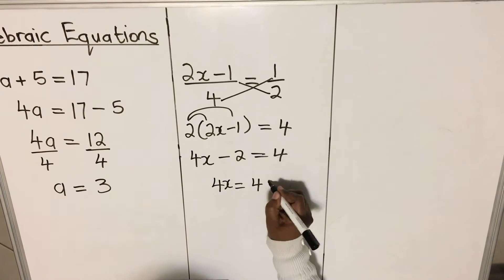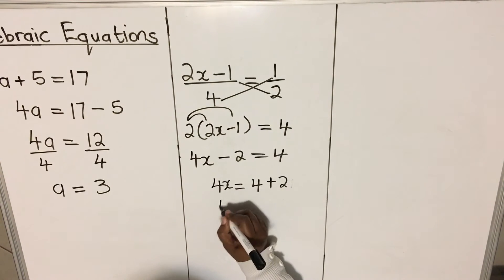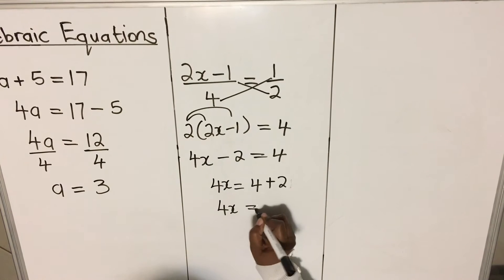When 2 goes to the other side, it becomes positive 2. Then we have 4x equals to 6.